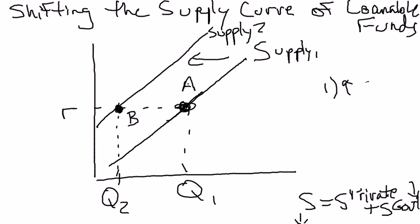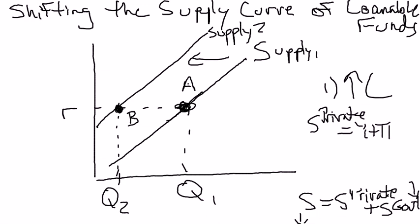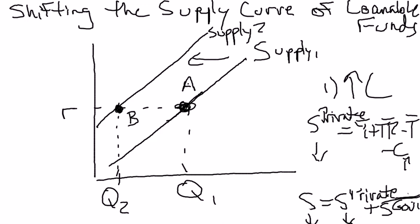Likewise, if government savings is constant but households decide to consume more, think about private savings: that's income plus transfers minus taxes minus consumption. If you keep income, transfers, and taxes constant but increase consumption, you lower private savings. If government savings is constant but private savings decreases, then national savings has to fall. Anything that leads to a decrease in national savings shifts the supply curve of loanable funds to the left.